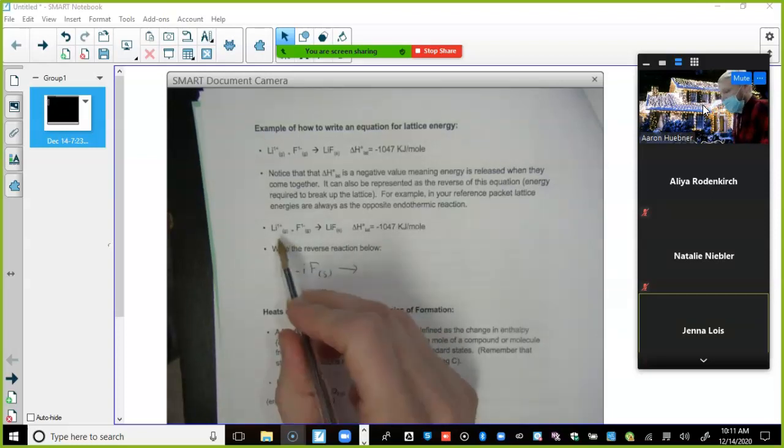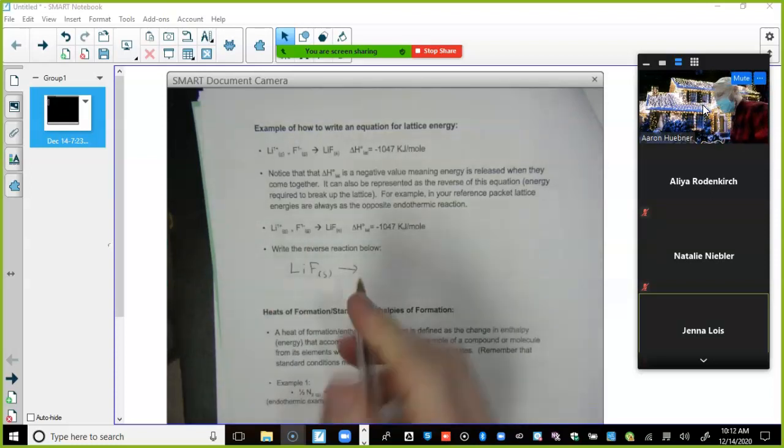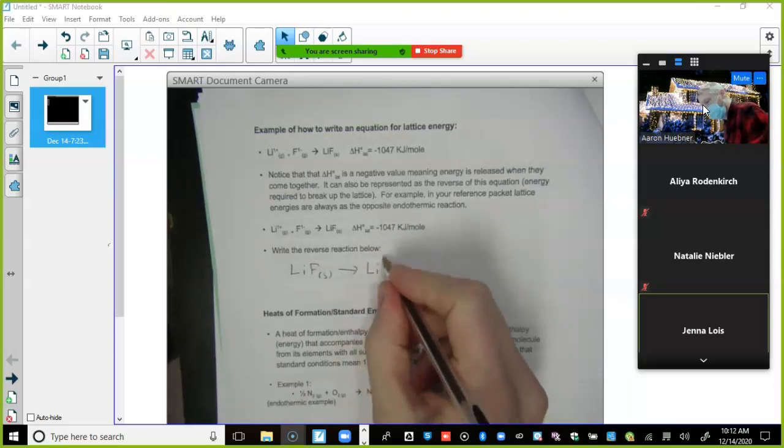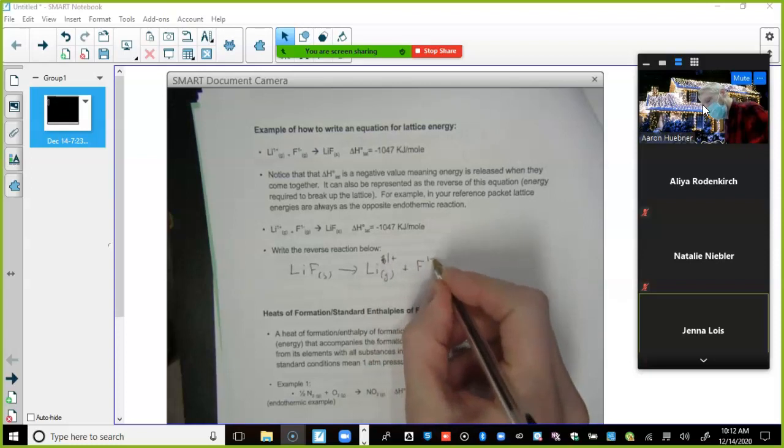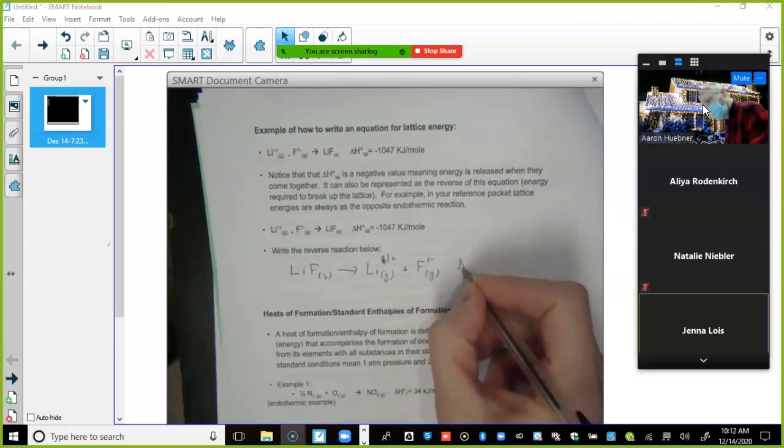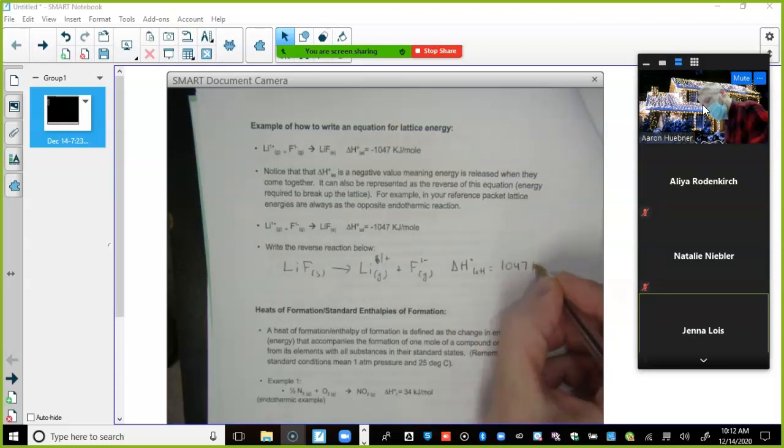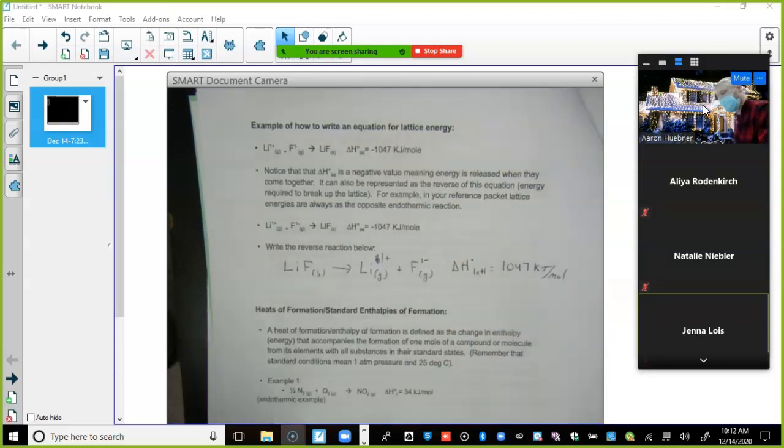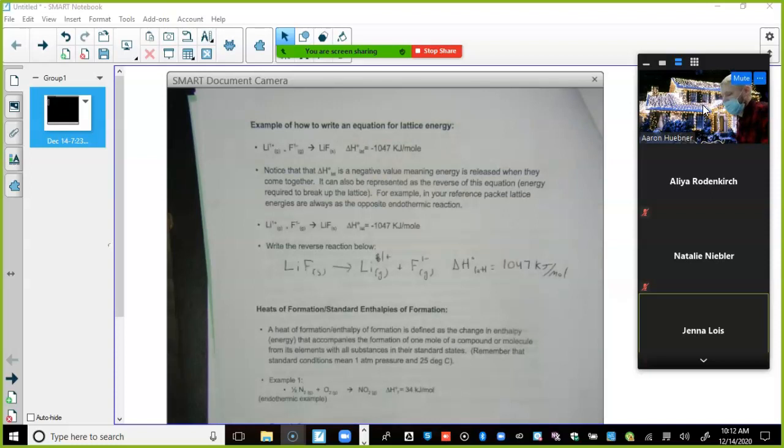Okay, we got to get through this page before we do the Born-Haber. So looking at this it says write the reverse reaction. Notice that delta H lattice is negative value meaning energy is released when they come together. It can also be separated as a reverse of this reaction. So write the reverse reaction. It would be lithium F. This is just showing why on the data booklet it's positive values instead of negative because it should be negative values. So if you can see, the ions come together, it's negative energy, the enthalpy. But if you pull them apart you got to input energy to do that. So that's going to be lithium plus, sorry I did that on the last time, chlorine one minus, and then our delta H of our lattice enthalpy equals positive 1047 kilojoules per mole. Is it the same value of energy? Yeah, absolute value at least.